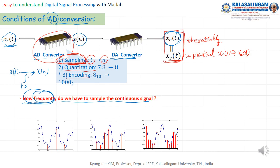For example, this kind of signal — the blue signal and the red is a discrete time signal. Now we are sampling at 0.5 seconds. In this case, we also have 0.25 seconds as the sampling period.